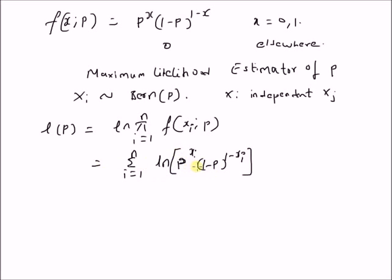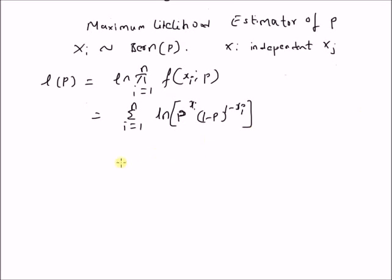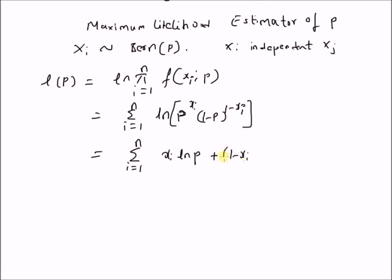So this is the log likelihood function. It can be further simplified as: since log(a·b) = log(a) + log(b), we have the summation from i=1 to n of x_i times log(p) plus (1-x_i) times log(1-p).